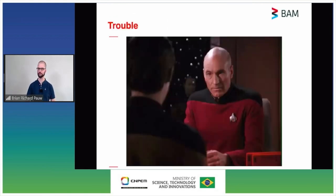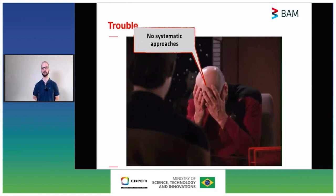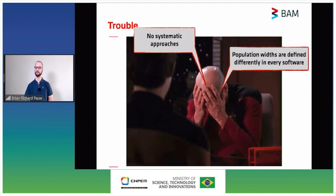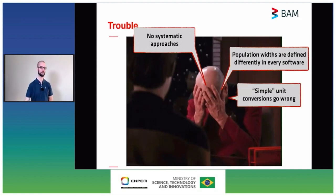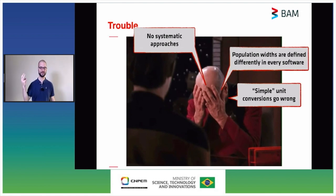In essence, we have trouble. What kind of trouble did I notice during this round robin? Firstly, we have no systematic approaches — not even for relatively common samples like spheres in a dispersion. If we provide a guide, this may give more consistent answers. Secondly, we define population widths differently in every single piece of software, making them incomparable. Thirdly, simple unit conversions go wrong: as a community we have not agreed on inverse angstroms, nanometers, centimeters, meters, or even two-theta — and had we agreed, we would avoid wasted time and conversion mistakes.